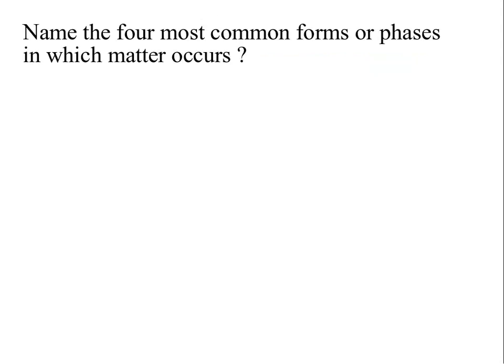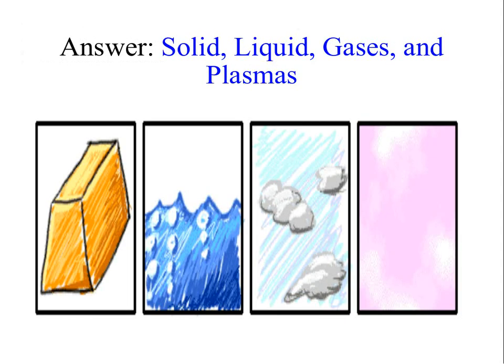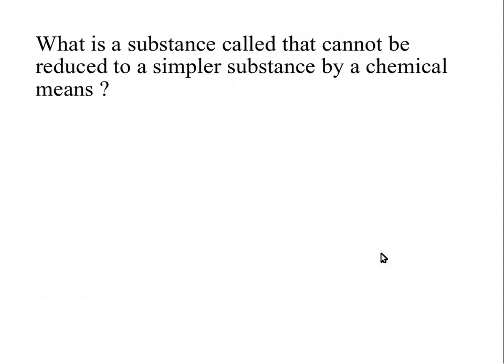Now what were those four most common forms or phases in which matter occurs? In other words, given an element, what different forms might you find it? Well, those four forms are called solids, liquids, gases, and plasmas. And just about any element can be found in those four different forms with a few exceptions. What is a substance called that cannot be reduced to a simpler substance by a chemical means? In other words, what kind of a substance can't you change into another substance by doing some kind of chemical reaction or heating it up or something like that?